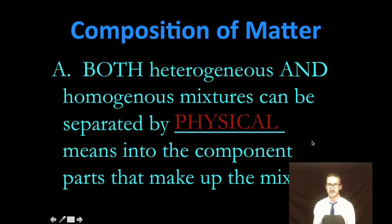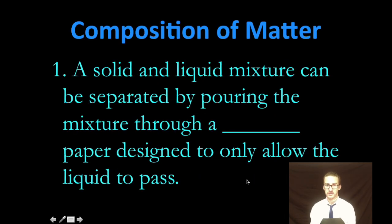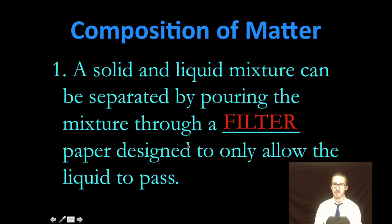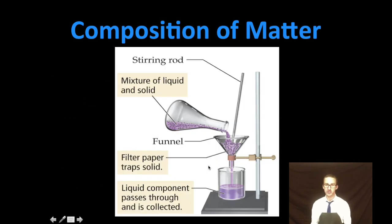However, it's important to recognize that both heterogeneous and homogeneous mixtures can be separated by physical means. And this is a big distinction to make between mixtures and pure substances. Now, there are lots of ways that you can physically separate a mixture. There are three ways that we're going to talk about here. The first is a process called filtration, where you simply pour a mixture through a filter paper that is designed to allow only the liquid to pass. And as you take a look at your notes, you're provided with a setup for the filtration process and will practice this process in class.